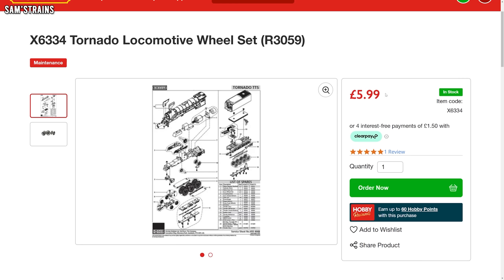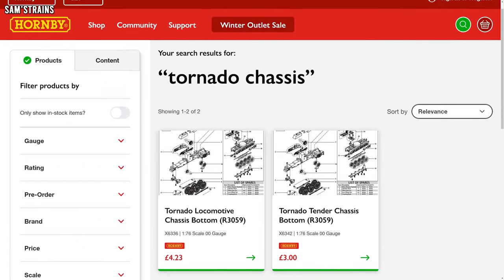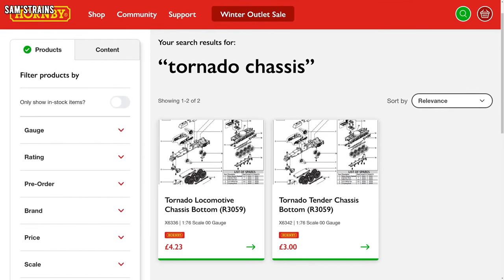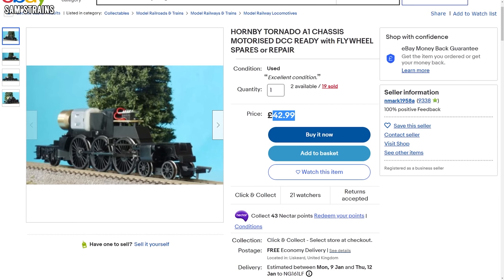Take the Hornby A1 for example, a new wheelset which includes the bearings is £5.99 from hornby.com. If you want a chassis, well first of all Hornby don't sell those so you have to go to eBay where they are over £40. I don't know about you but in the unlikely event a loco does wear out I'd rather spend a fiver than 40 quid.